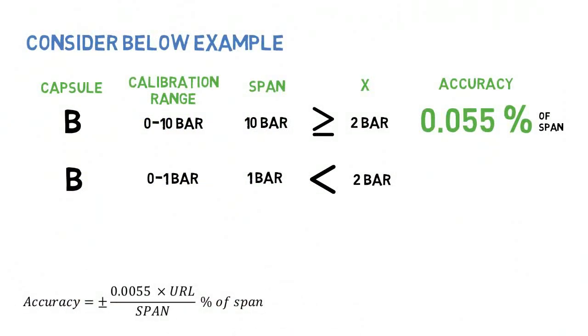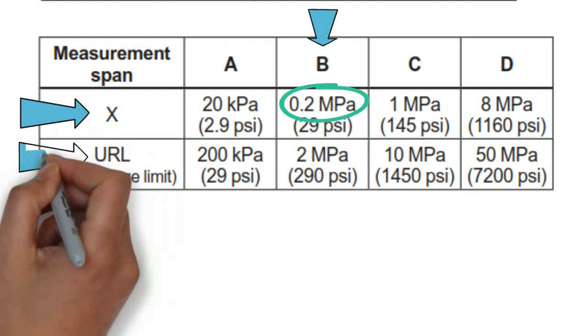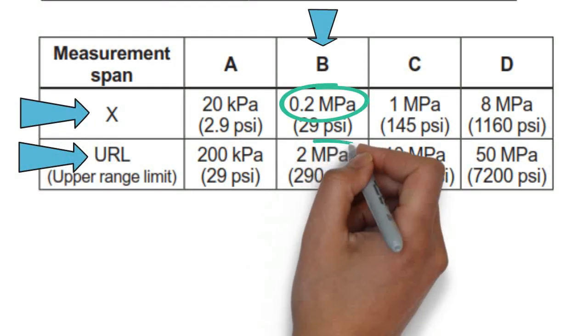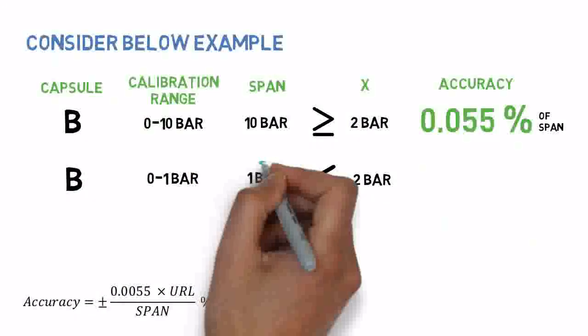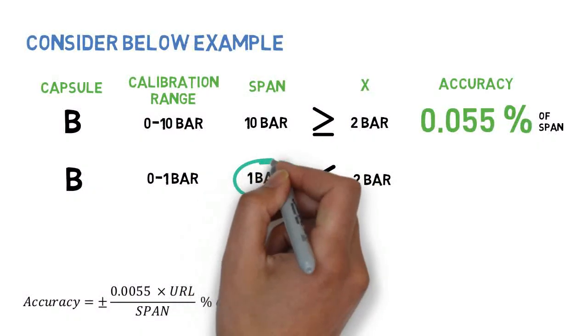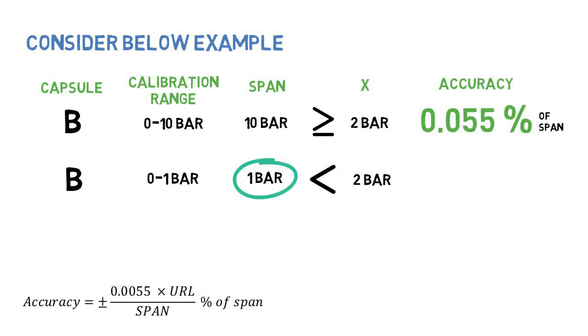For example, URL for capsule B is 2 MPa or 20 bar. Substituting URL and span value of this example into this formula, accuracy is 0.11% of span.